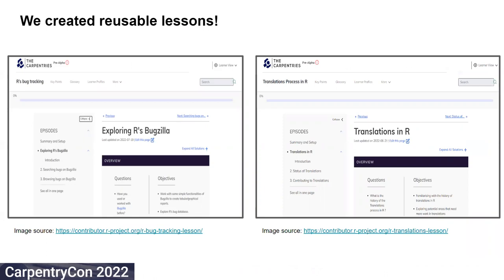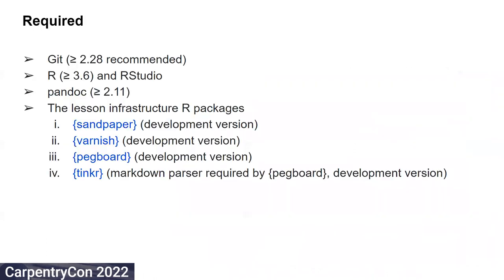Eventually, we created two reusable lessons using the materials that were delivered during these sessions. As a prerequisite for creating these lessons, you would require Git, R and RStudio, and Pandoc installed on your machine. You would also need to install the Sandpaper, Varnish, Pegboard, and TinkR R packages.